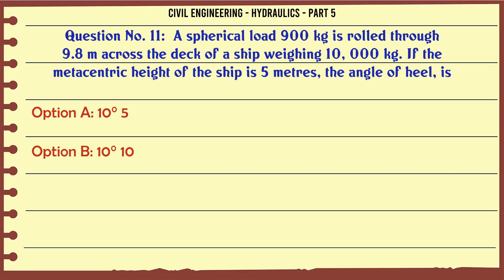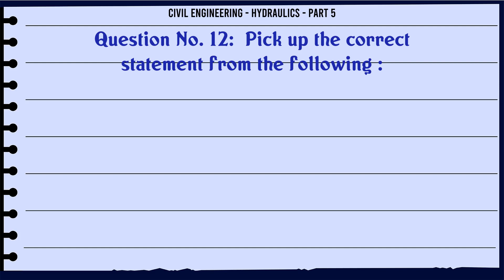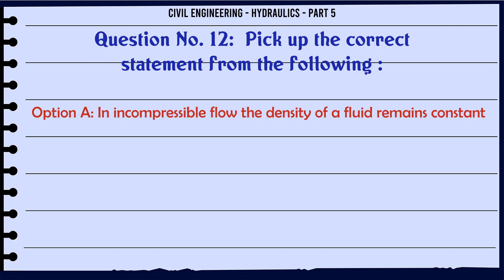A spherical load of 900 kg is rolled through 9.8 m across the deck of a ship weighing 10,000 kg. If the metacentric height of the ship is 5 meters, the angle of heel is: A. 10°5', B. 10°10', C. 10°15', D. 10°20'. The correct answer is 10°15'.